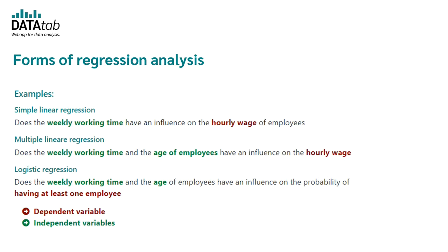Let's do a quick recap. Simple linear regression: for example, does weekly working time have an influence on the hourly wage of employees — using only one independent variable. Multiple linear regression: do weekly working time and age of employees have an influence on hourly wage? Logistic regression: do weekly working time and age of employees have an influence on the probability of a certain outcome — a yes-or-no dependent variable. Now I will show you how to easily calculate a regression online.